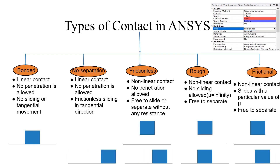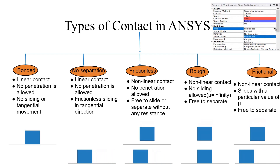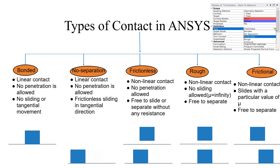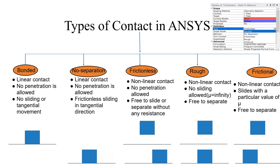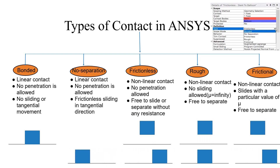Bonded means the contact and target are stuck together, like welded. The initial default condition of all contacts in ANSYS is bonded, so we have to change it according to our needs. In 'no separation,' as the name says, there is no normal movement — only tangential sliding is allowed, which is frictionless in nature.